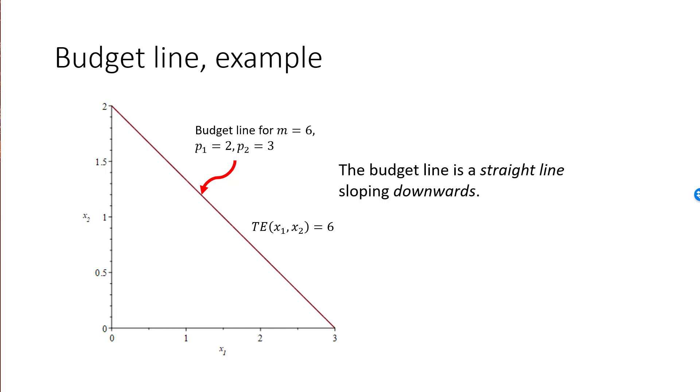Also note that the budget line must slope downwards, at least as long as prices are positive. If you have two different bundles on the budget line, then they will have the same cost. If the first bundle has more cookies compared to the second bundle, then it simply must have less milk if they are to cost exactly the same.